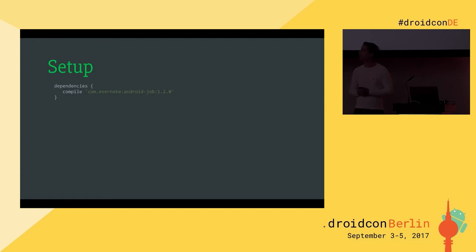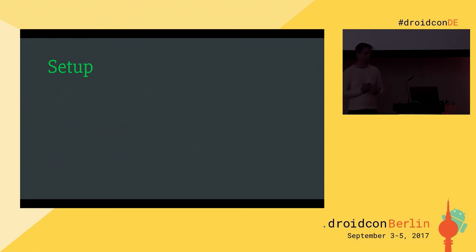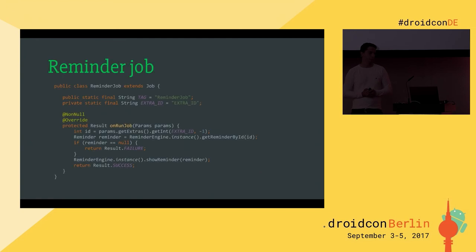How do we use the library? It's really simple. First add the dependency. Then create the job manager — the best place is inside the Application class. Once created, add a job creator interface, which is just a mapping from your job tags (strings) to the actual job class. It basically replaces the manifest entry but is more dynamic. That's it — with the job creator interface and the dependency, we can start implementing our reminder job.